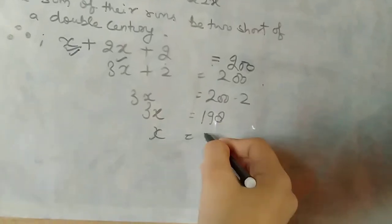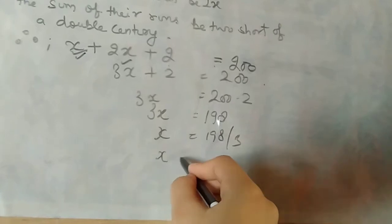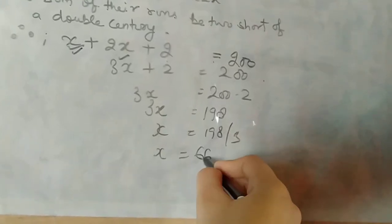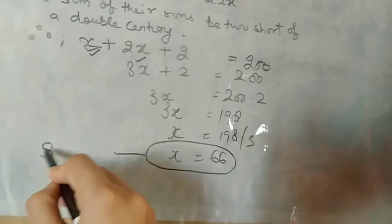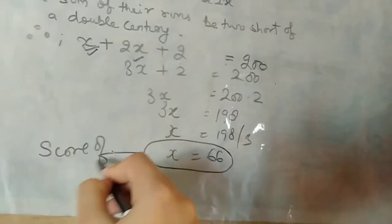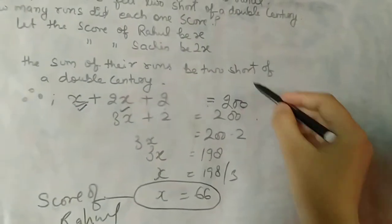Now divide 198 by 3. 198 divided by 3 equals 66. So x equals 66. This is the score of Rahul. And what about Sachin's score?